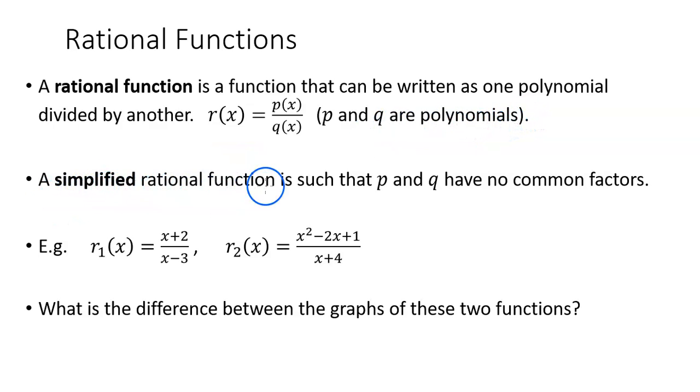A simplified rational function is such that p and q have no common factors. Now, when we're talking about polynomials, for polynomials to have no common factors, a factor is another polynomial.